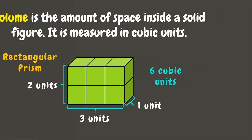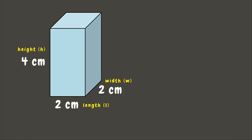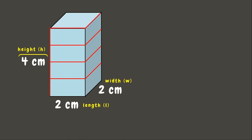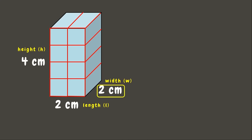Now let's go back to our problem and try to make some cubic units using the dimensions of this figure. The rectangular prism has a height of four centimeters, meaning it has four one-centimeter units: one, two, three, and four. For the length it has two centimeters, so that will be one and two. And also for its width it has two one-centimeter units: one and two. Now we have formed some cubic units — let us count them.